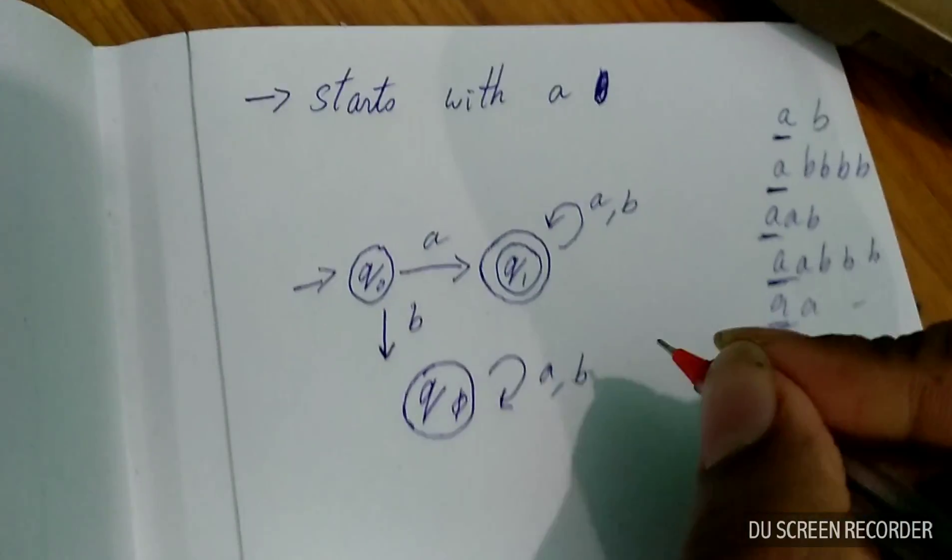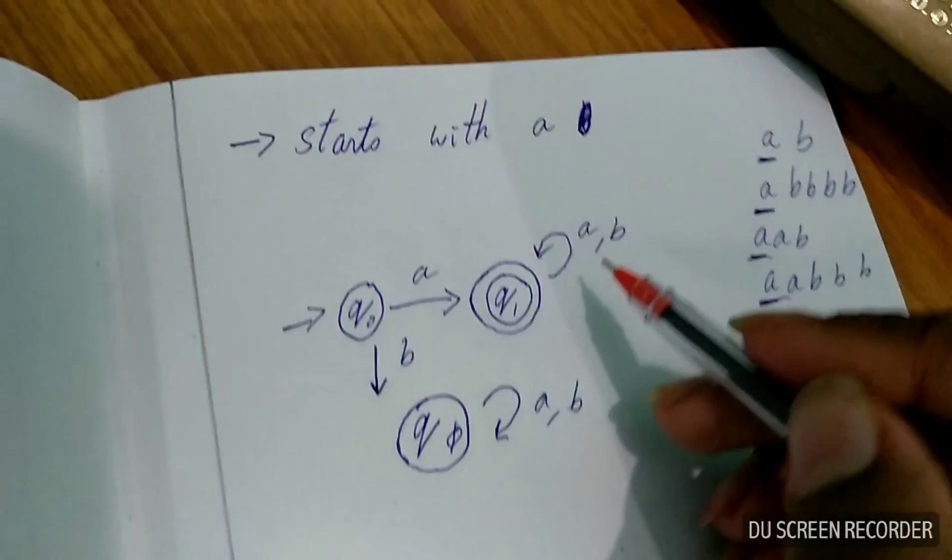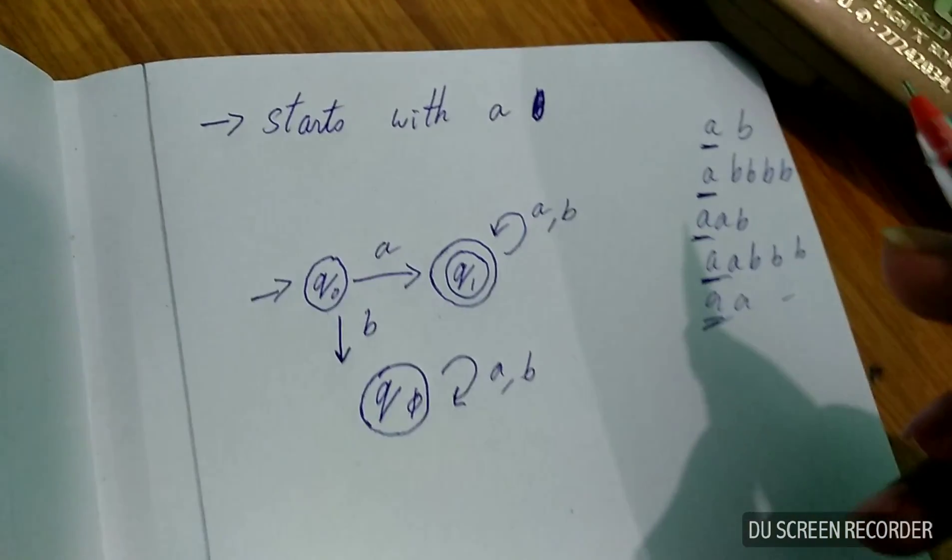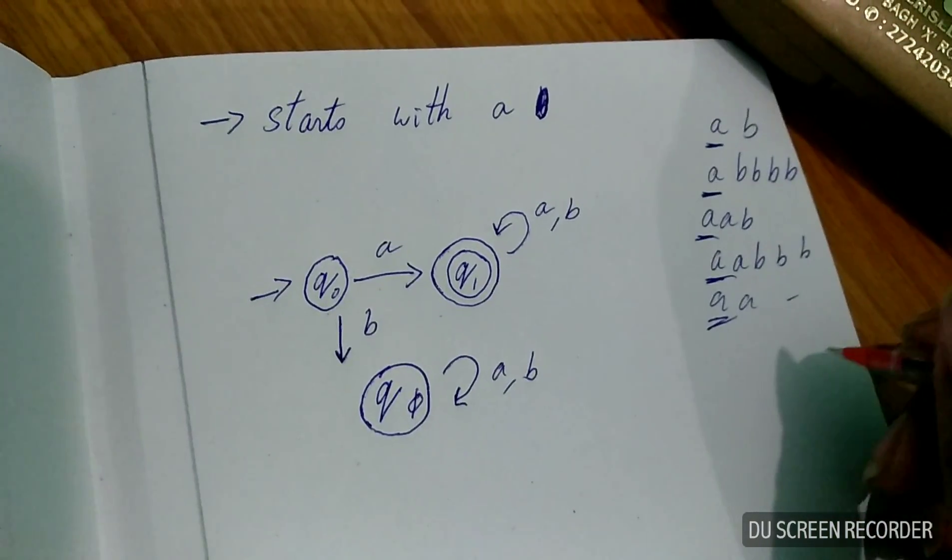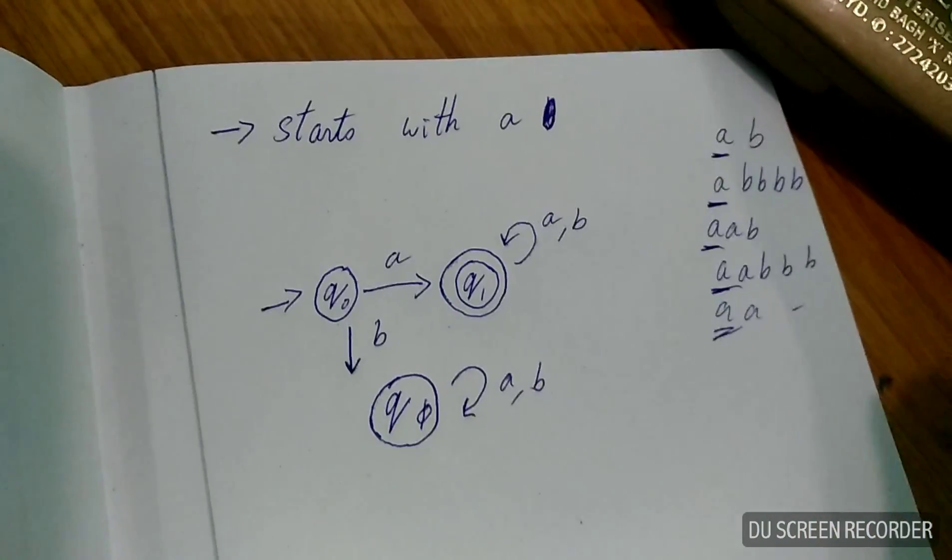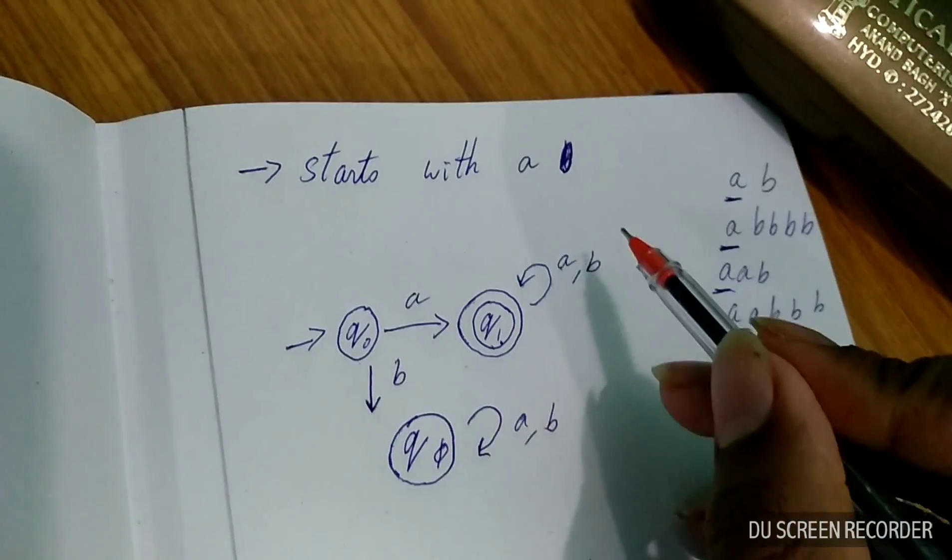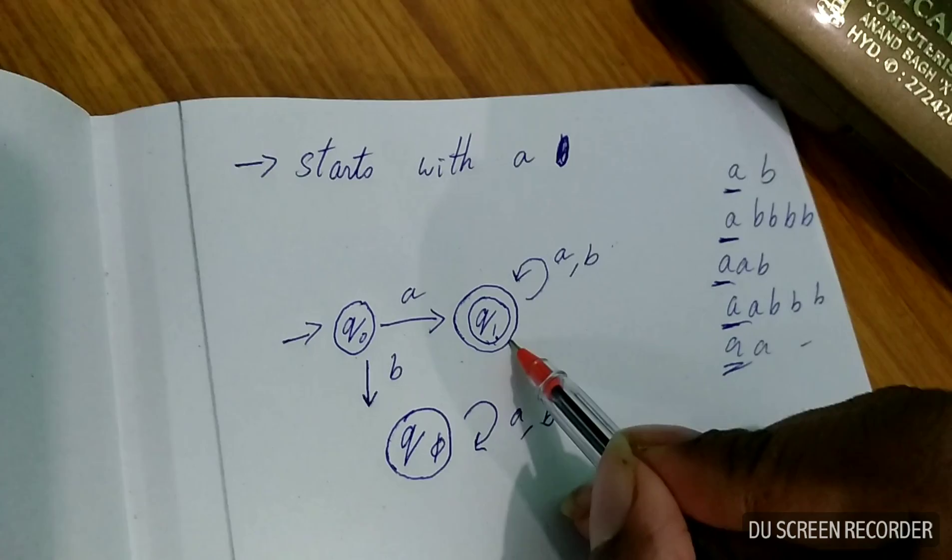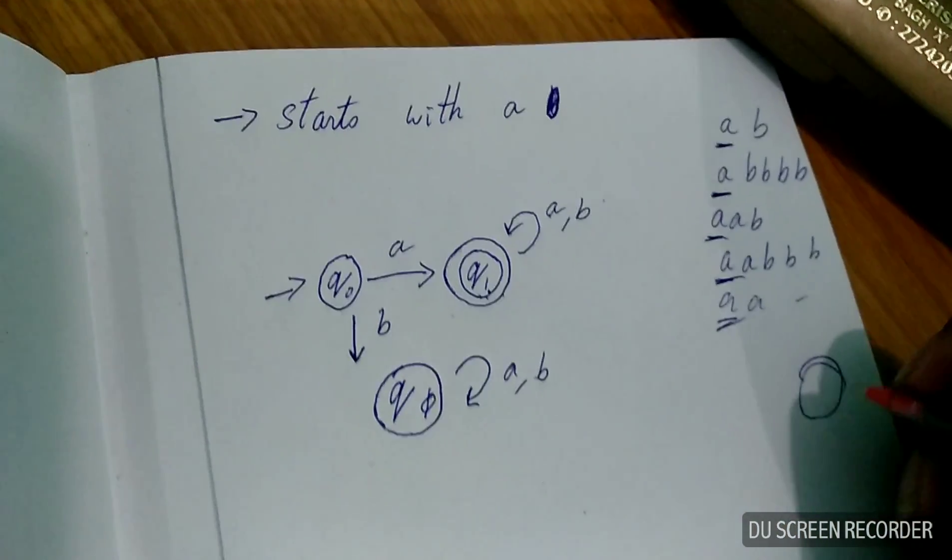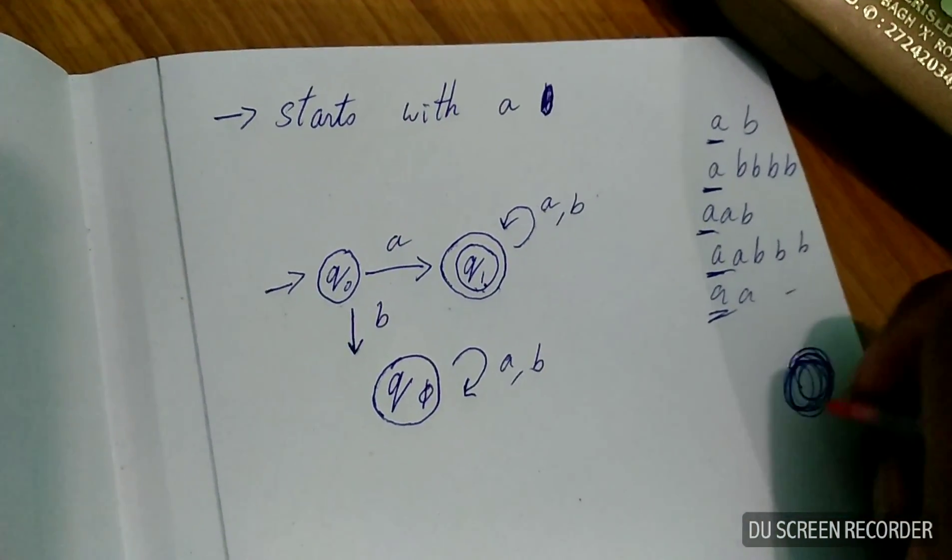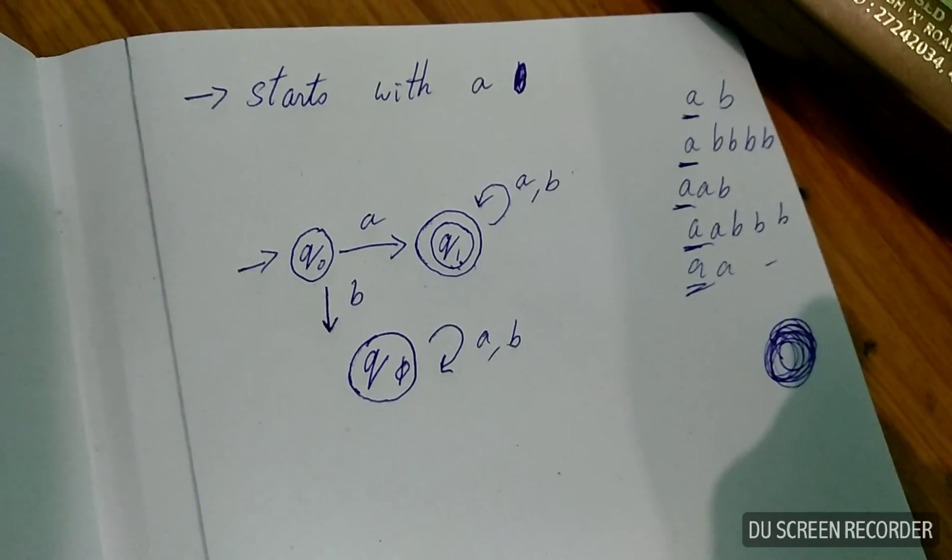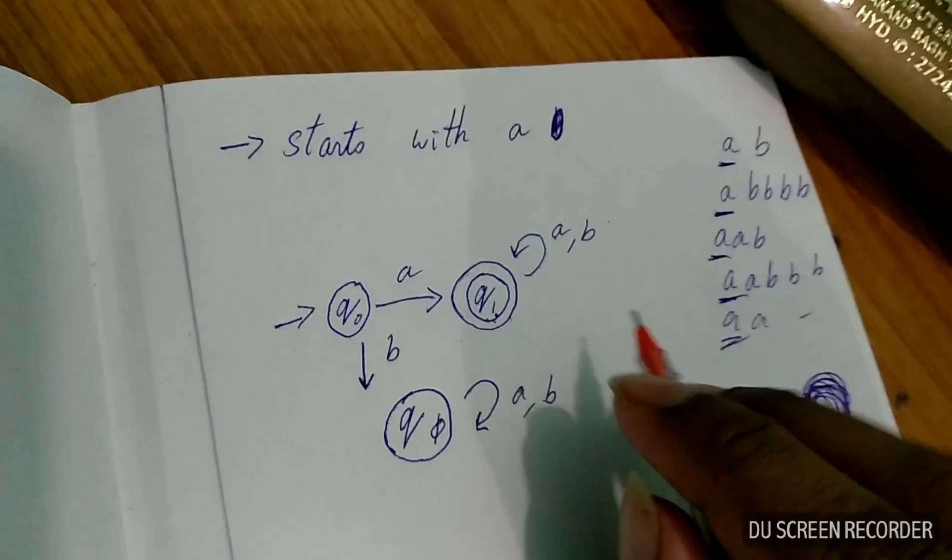Maybe you are confused, what is self-loop? This is actually self-loop. Self-loop is nothing but anything in this state, if we occur A or B, doesn't matter, it will remain in the same state. It will continue like this. It's a loop. It will go round, round, round. There's no end for it.